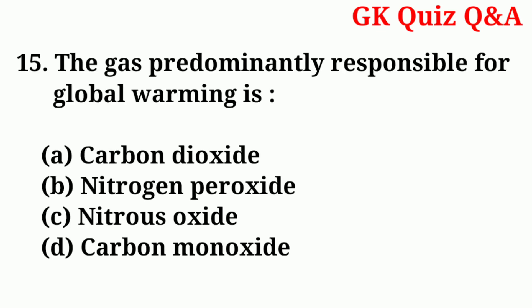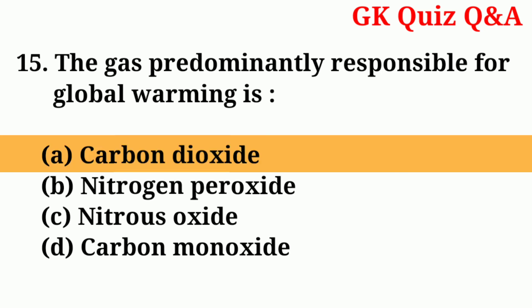Number fifteen: the gas predominantly responsible for global warming is — answer: number A — carbon dioxide.